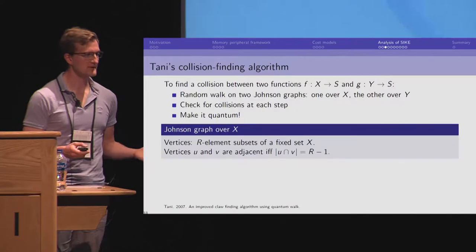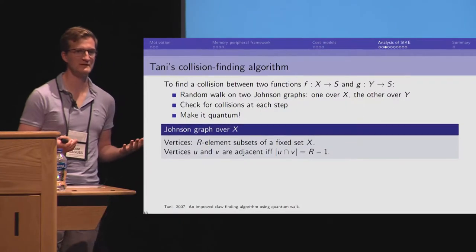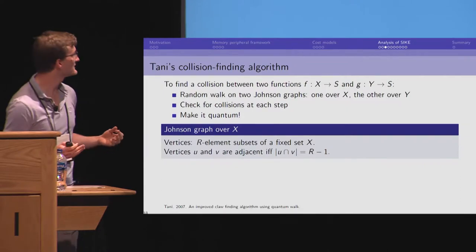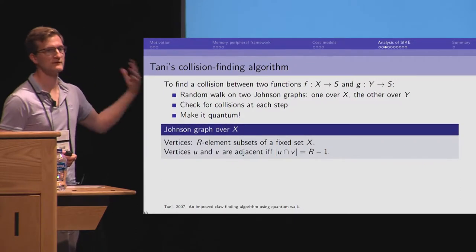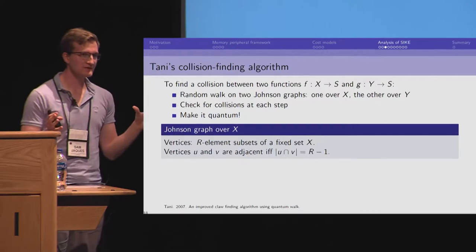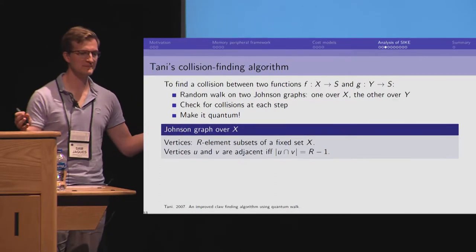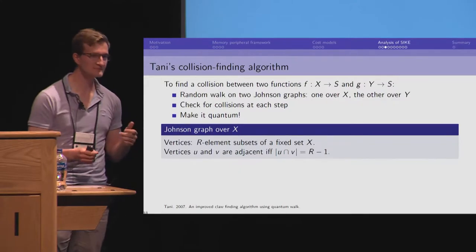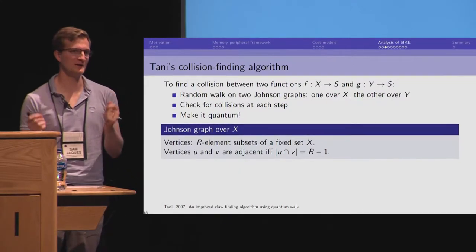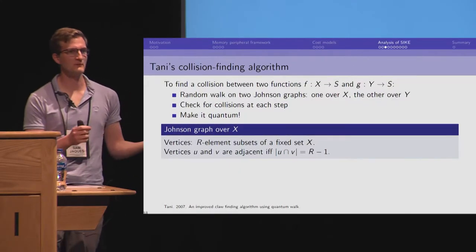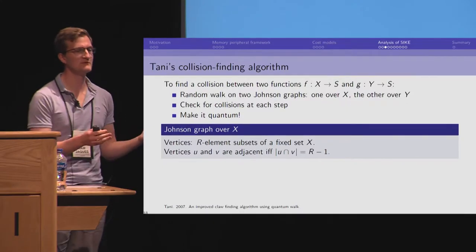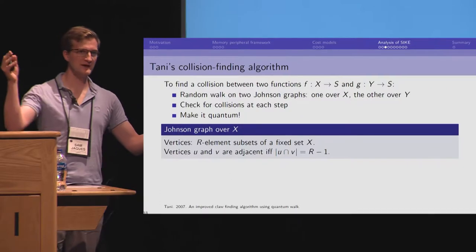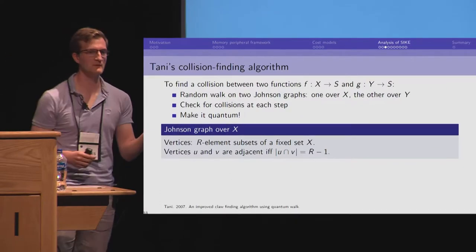Hence the quantum algorithm that was previously viewed as the best attack is a generic collision finding algorithm by Tani. It uses a random walk on a Johnson graph. A Johnson graph is you take a set X and you make vertices out of every subset of size R. And they're adjacent if they differ in exactly one element. So, if you take a random walk on this graph, this is completely equivalent to taking your set, removing an element at random, and inserting a new element at random. And that will be one step.